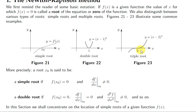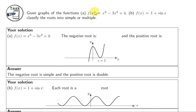Let's look at some more examples. Take the function x³ − 3x² + 4. The negative root is a simple root — the first derivative is not 0 because the tangent is not horizontal. At x = 2, we have a double root: the first derivative is 0 and the tangent is horizontal.